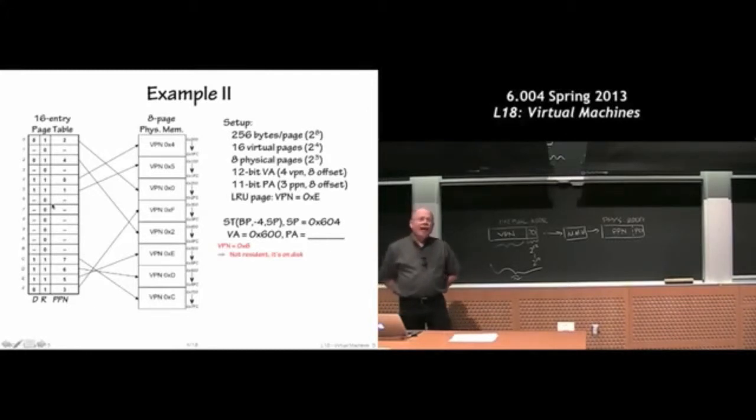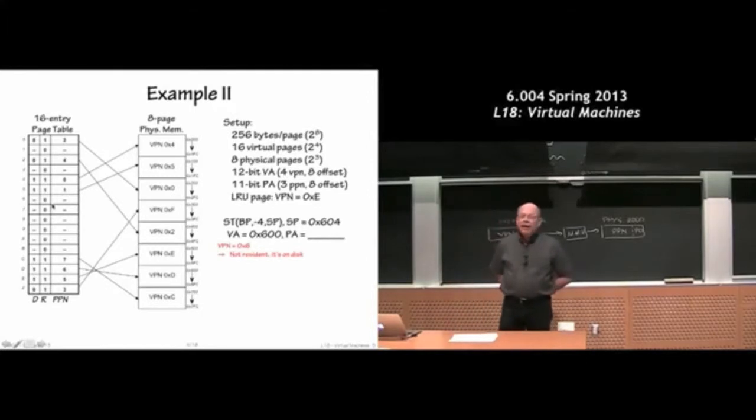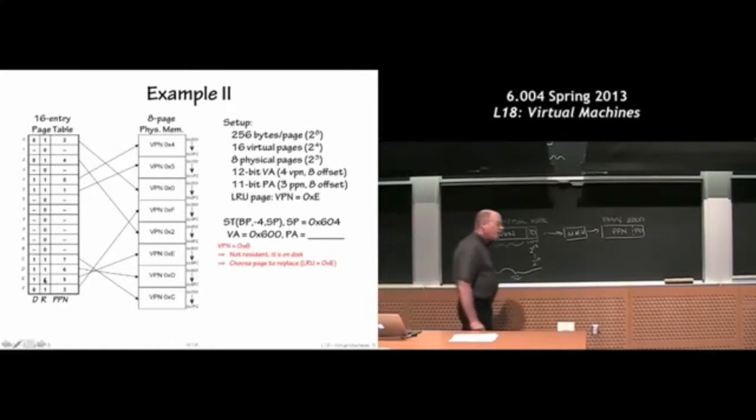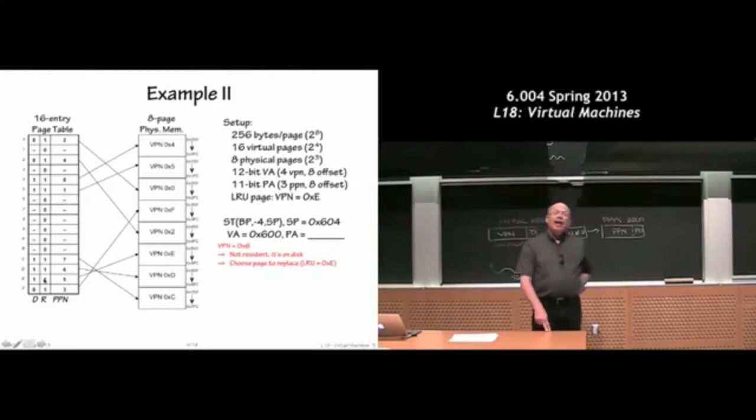So now we have a, this is when we would take a page fault. And now we have a slightly more drawn out process where we have to go off and choose some physical, some page that we're going to actually say, we're going to have to take some page that's currently in physical memory and get rid of it. So our least recently used page is virtual page number E. So this is the least recently used page down there. So what we're going to do is we're going to take that page out of our mapping.